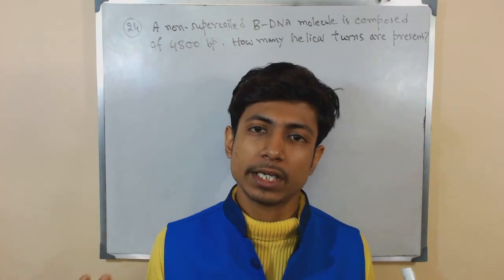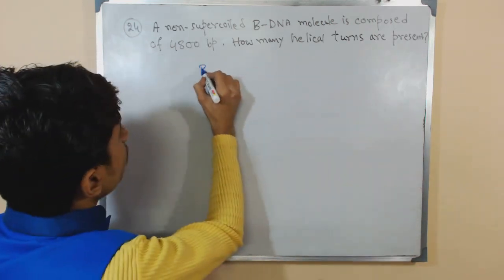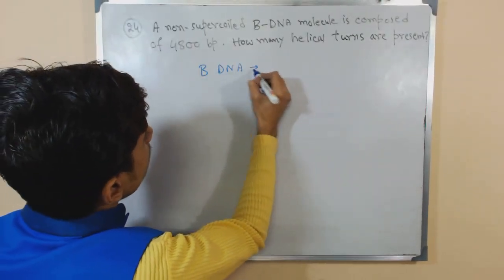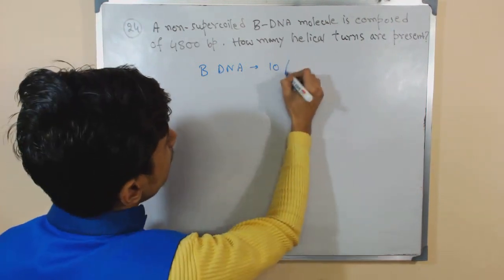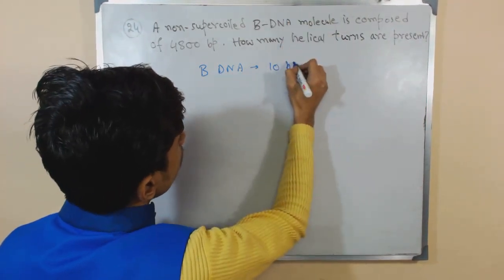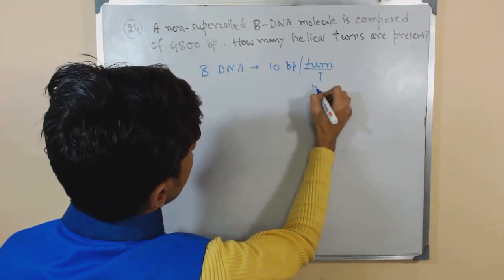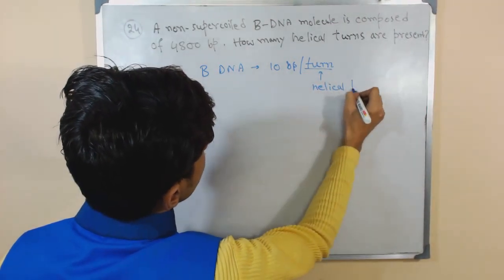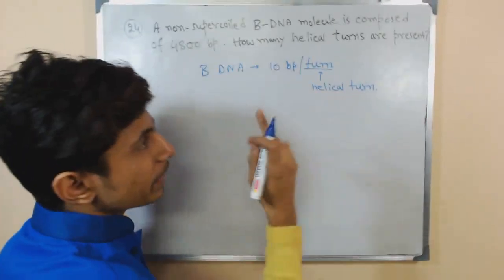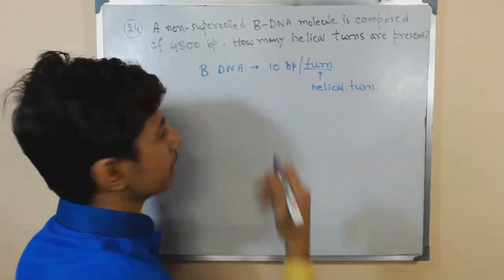Because the normal property will state, and we all know that for B-DNA there are approximately 10 base pairs per turn. Turn means obviously helical turn, right? So 10 base pairs completed and one turn is complete.